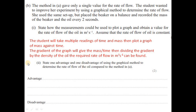State one advantage and one disadvantage of the graphical method compared to method A. The advantage is that because we use various readings to plot the graph, we can identify anomalous readings, detect variation in flow, and obtain a more accurate value. The disadvantage is related to timing: since measurements are taken every two seconds, it is difficult to record mass and time simultaneously — there is a reaction time involved.